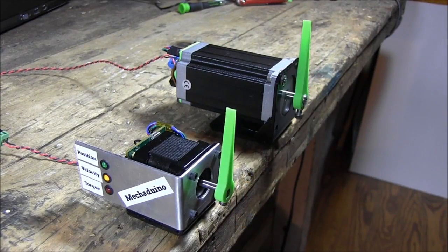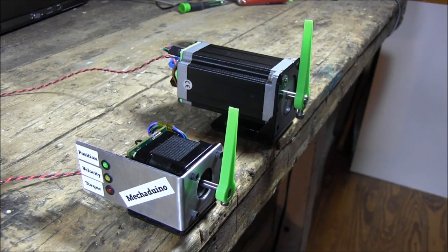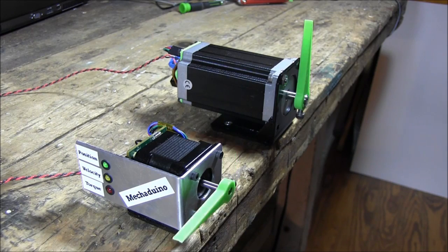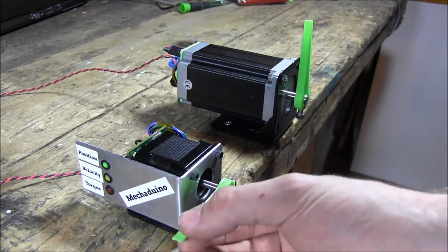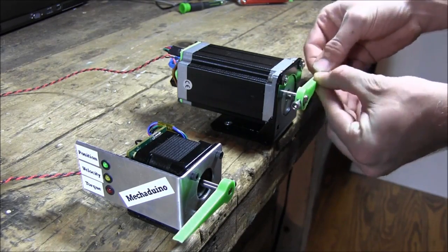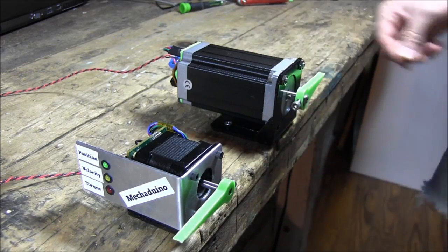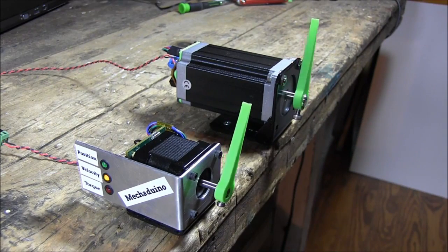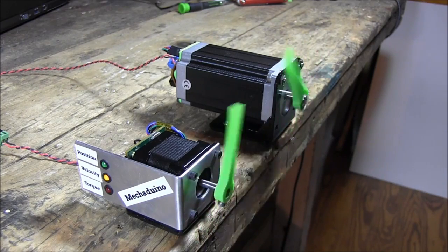Mechaduino is a low-cost, open-source industrial servo motor. Mechaduino features a 14-bit magnetic encoder for precision position feedback, true closed-loop control that rejects disturbances. In addition to closed-loop position control, Mechaduino features velocity, torque, and user-definable modes.